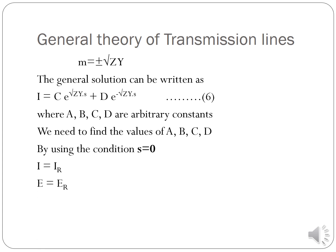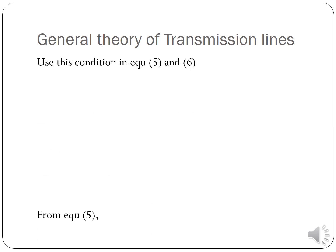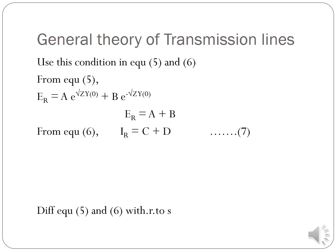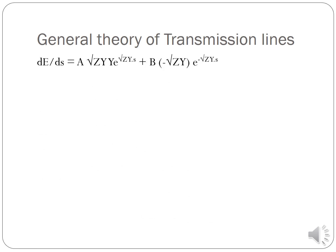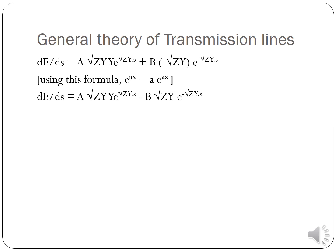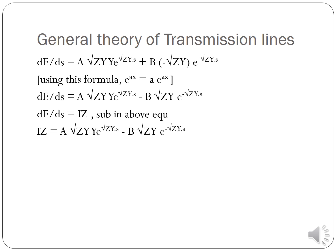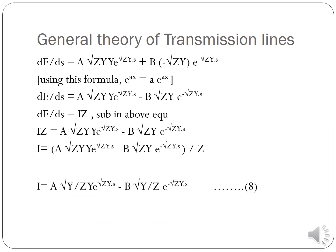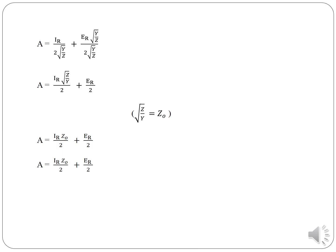To find A, B, C, D, we assume the initial condition S = 0. Applying this, we get E = ER and I = IR. Using this condition: ER = A·e^(√ZY·0) + B·e^(−√ZY·0), so ER = A + B and IR = C + D. Differentiating and substituting, dE/dS = A·√ZY·e^(√ZY·S) − B·√ZY·e^(−√ZY·S), and using dE/dS = I·Z, we get A = IR/(2)·√(Z/Y) + ER/2.